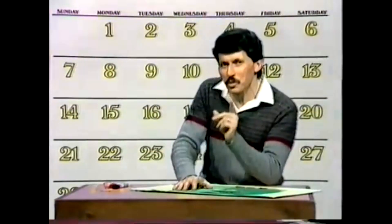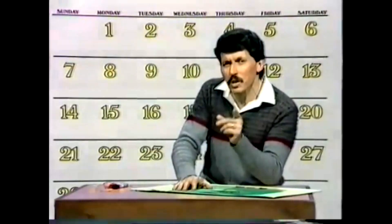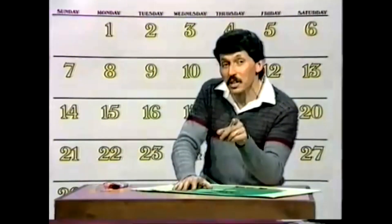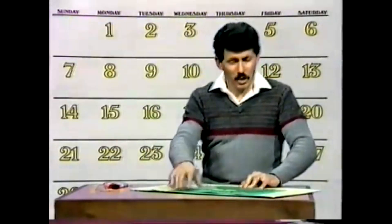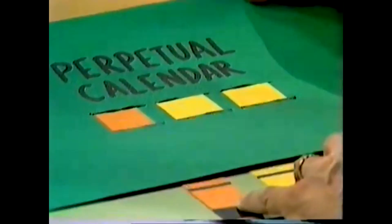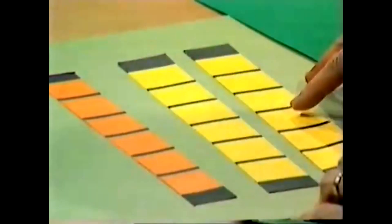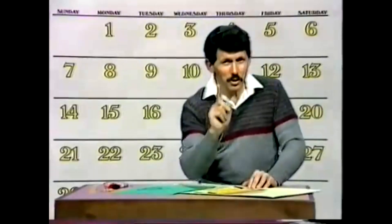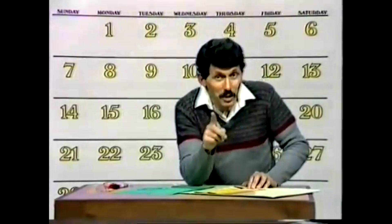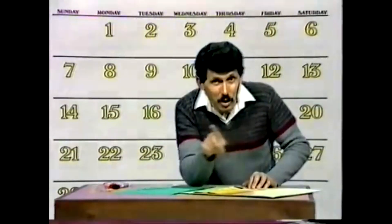But what I want you to try and work out is: what's the minimum number of letters and numbers that you need to make a perpetual calendar that really works? Have a look at what I've done here. I've placed three strips in those slots or windows, and you'll notice that each strip has just one, two, three, four, five, six spaces on it. In other words, we've got 18 spaces for letters and numbers, and I tell you that with just 18 spaces you should be able to make a perpetual calendar that'll go on forever.